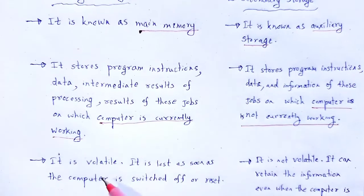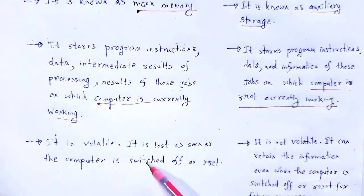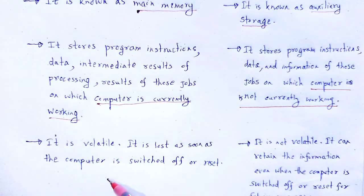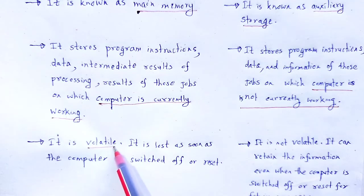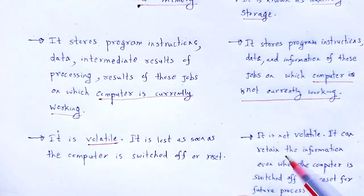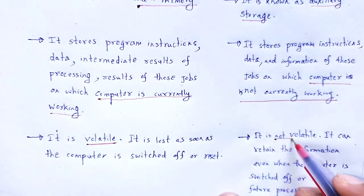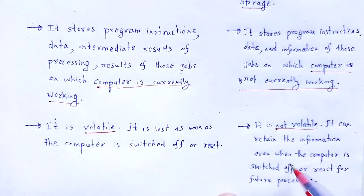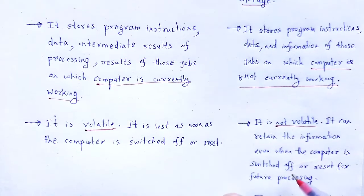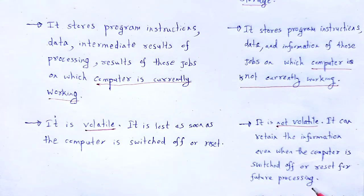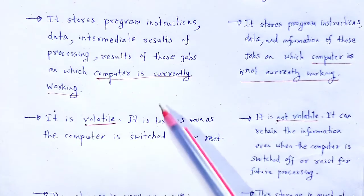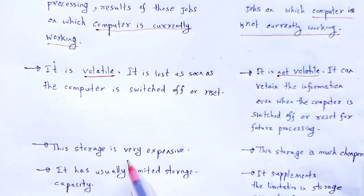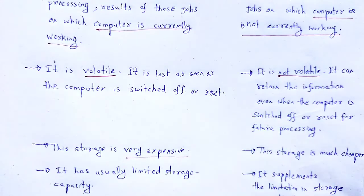Primary storage is volatile — meaning data is lost as soon as the computer is switched off or reset. Therefore that storage is known as volatile. Secondary storage, however, is permanent and not volatile; the information is stored even when the computer is switched off or reset, for future processing. Primary storage is very expensive, but secondary storage is much cheaper than primary storage.